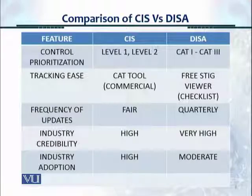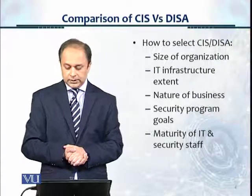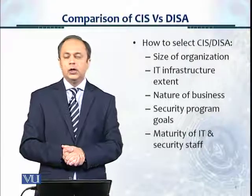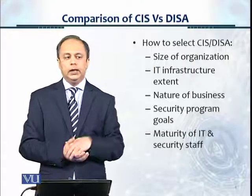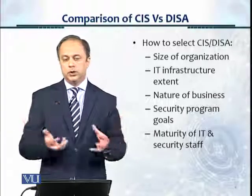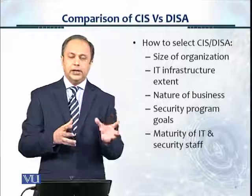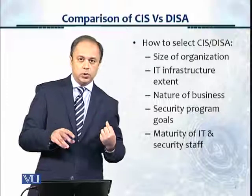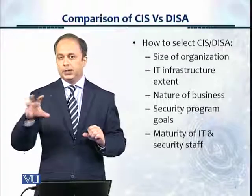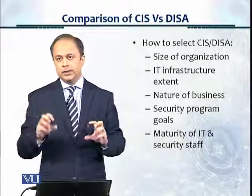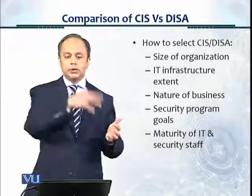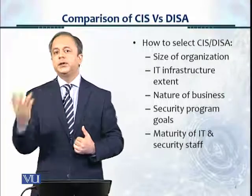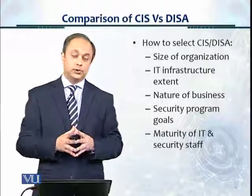So how do you select CIS or DISA? Consider the size of the organization, IT infrastructure extent, nature of the business, security program goals, and maturity of IT and security staff. It's really hard to say which should be chosen — the security team has to decide. It usually helps to pick certain controls from CIS and apply them, then pick the same controls from DISA and see where you are comfortable, and check if all your IT infrastructure is covered by either framework.